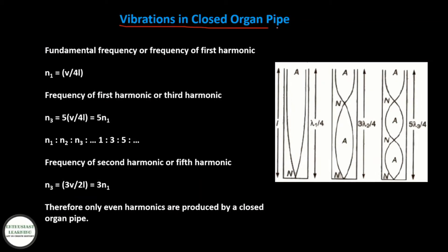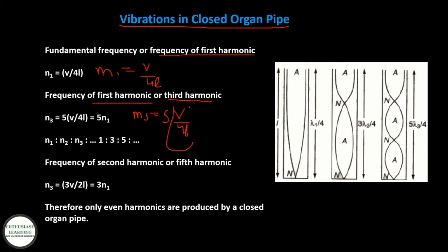Vibrations in a closed organ pipe: fundamental frequency (first harmonic) is n1 = V/(4L). First overtone (third harmonic) is n3 = 3V/(4L) = 3n1. Second overtone (fifth harmonic) is n5 = 5V/(4L) = 5n1. So n1 : n2 : n3 = 1 : 3 : 5. Therefore, only odd harmonics are produced by a closed organ pipe.